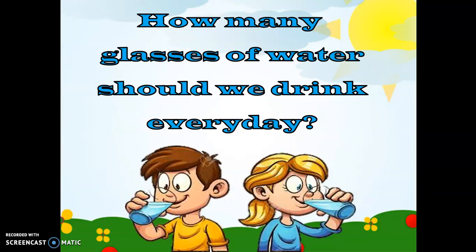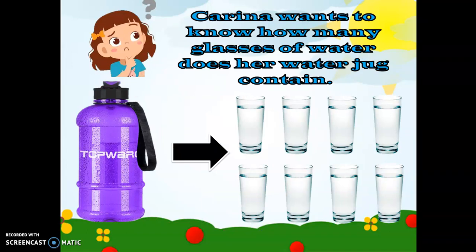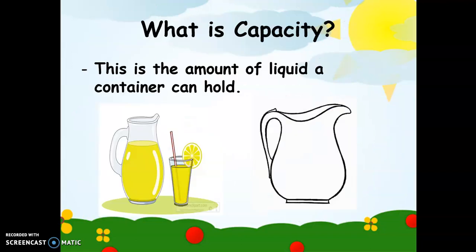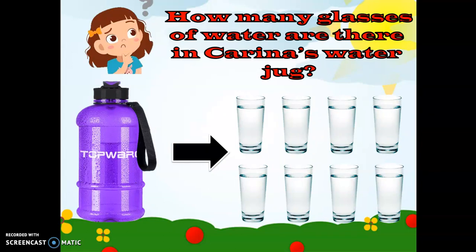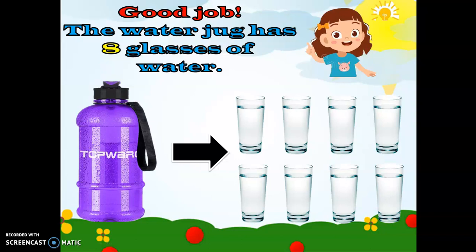Now we go to capacity. How many glasses of water should we drink every day? Remember, kids, to drink your water to keep yourself healthy! Just like Karina — she wants to know how many glasses of water her water jug contains, so she wants to know the capacity of her water jug. What is capacity? It is the amount of liquid a container can hold. In Karina's case, how many glasses of water are there? Let's count: one, two, three, four, five, six, seven, eight. Good job! The water jug has eight glasses of water.